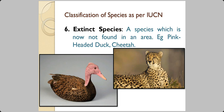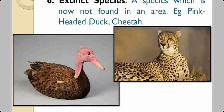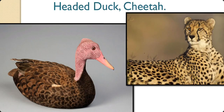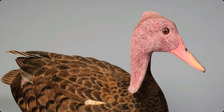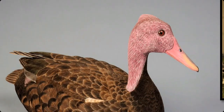Extinct species are those not found in an area anymore — whether a locality, a state, a country, or the whole world. The pink-headed duck was once common in northern India, and in the 1870s the Calcutta bird market used to see 10–12 birds every week. From 1935 onwards there were no sightings; the last bird was seen in Darbhanga district in Bihar, and it has since been declared extinct.